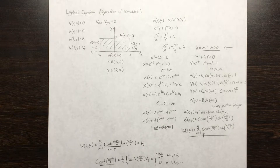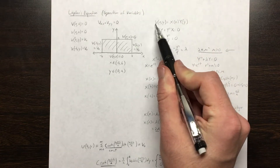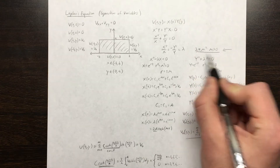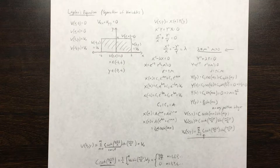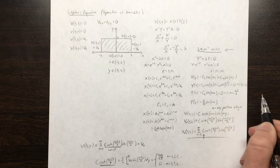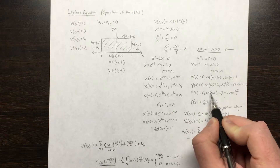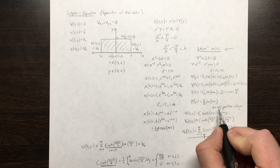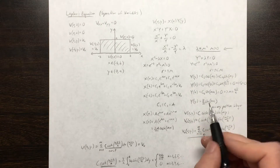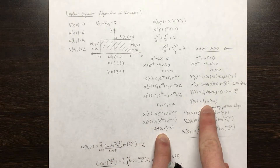We know the trivial solution satisfies Laplace's equation, but it's not the solution we're looking for. So we need the sine term to be zero, and the only way to do that is to let mu = n·pi/a. Substituting this in, the a's cancel and we're left with sin(n·pi), where n is any positive integer — and the sine of any positive integer multiple of pi is zero. Renaming c4 as b, we now have solutions for both X and Y.